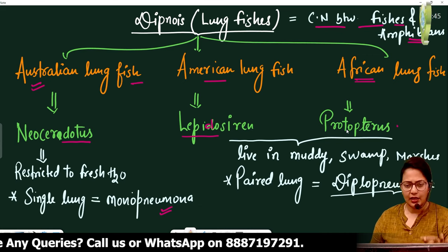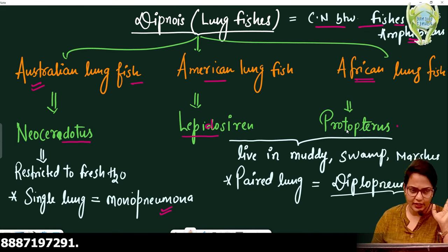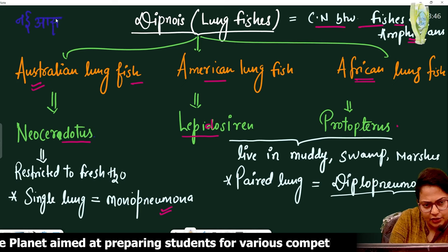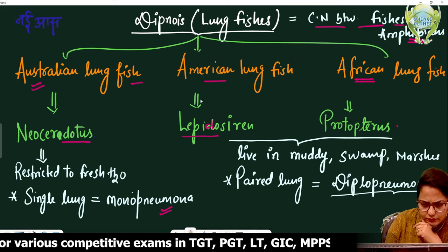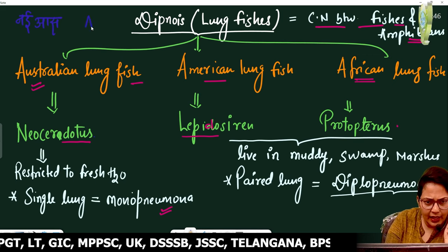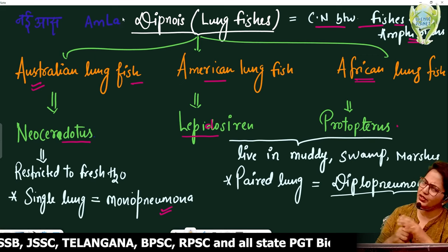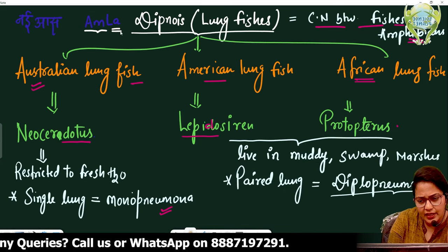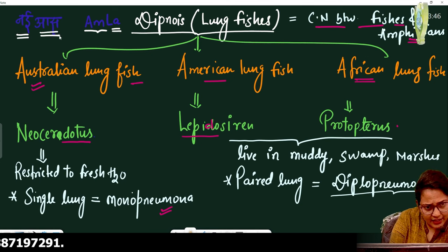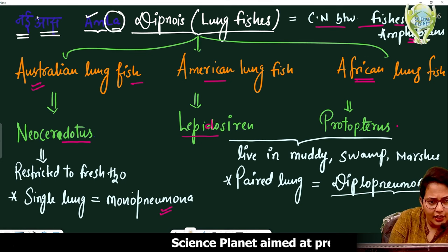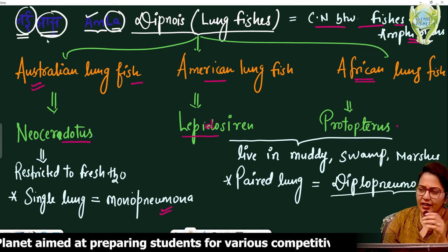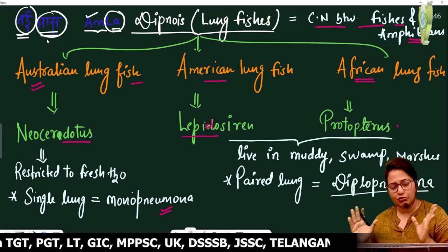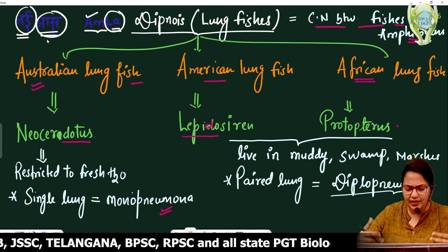To summarize: Australian lung fish is Neoceratodus, American lung fish is Lepidosiren, and African lung fish is Protopterus. Remember the trick: 'Neo' means new — Neoceratodus is Australian. Lepidosiren is American. Protopterus is African.